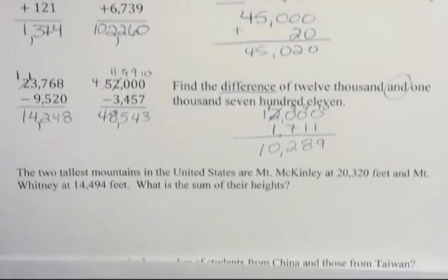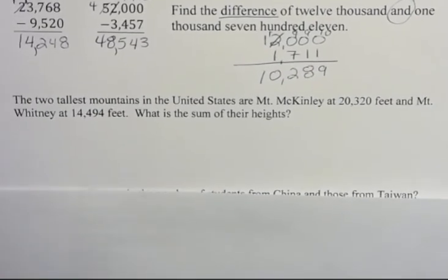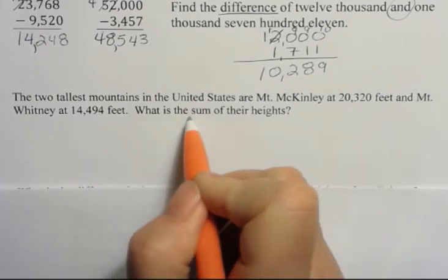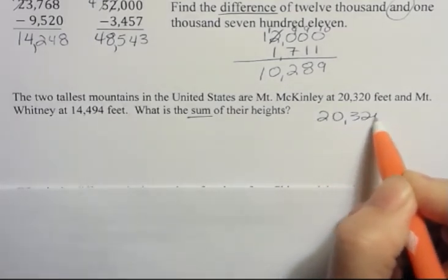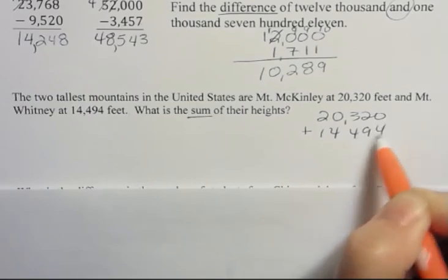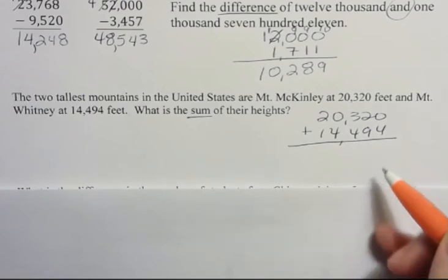Two word problems examples. One, the two tallest mountains in the United States are Mount McKinley at 20,320 feet and Mount Whitney at 14,494 feet. What is the sum of their heights? What we're asking you to do here is to add, because that's the sum. 20,320 plus 14,494. Adding straight down. Notice I'm always writing those, lining up the place values.